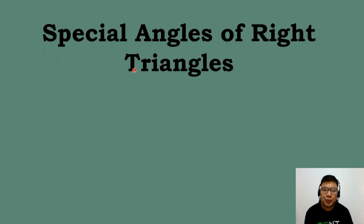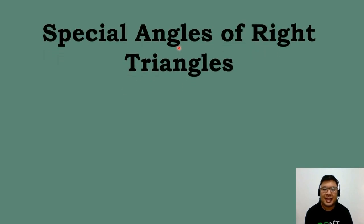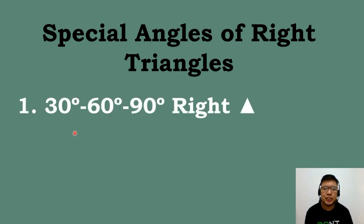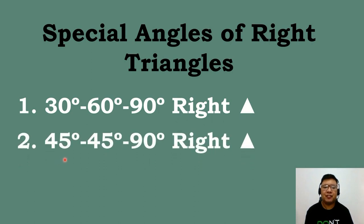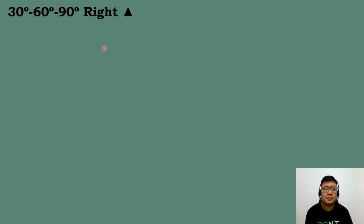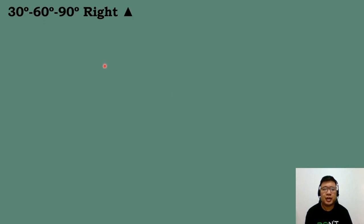The reason that we can evaluate trigonometric ratios is because of the two special right triangles, which we have discussed on our previous video. These two triangles are the 30-60-90 degrees right triangle and the 45-45-90 degrees right triangle. Let's start with the first special right triangle, which is the 30-60-90 degrees right triangle.